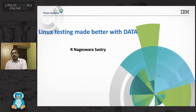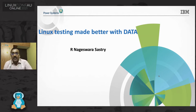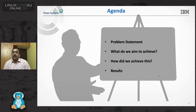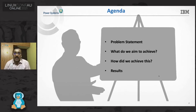Data is fuel to any product transformation. Any useful insights derived from data helps in reducing unnecessary work, doing things much faster with more accuracy and efficiency. The objective of this talk is to present how to utilize the data collected from the testing process. For the next couple of minutes, I'll take you through the agenda: the problem statement, what do we aim to achieve, how did we achieve this, and some results.